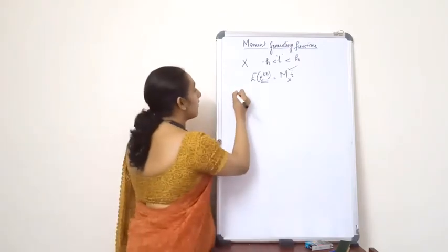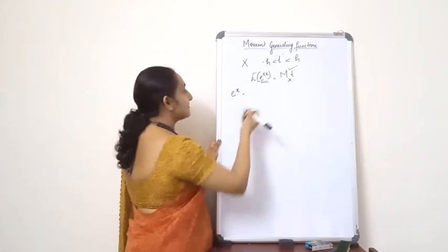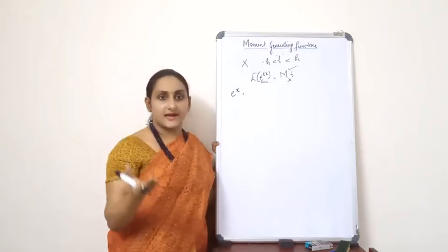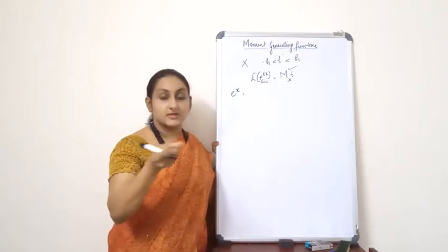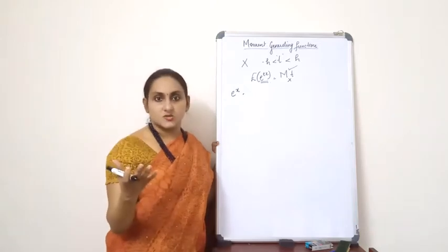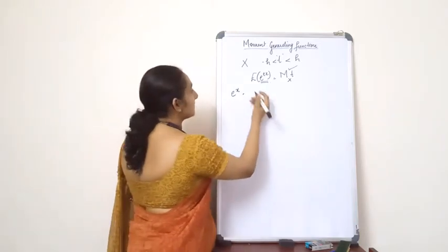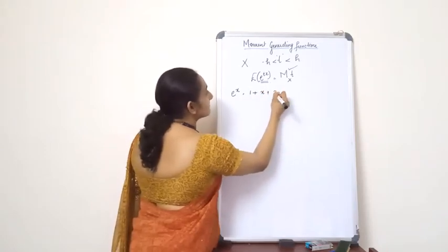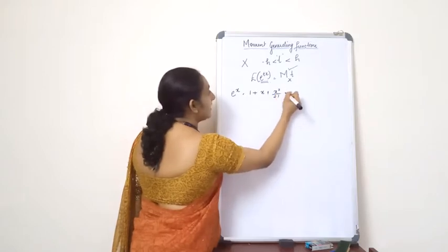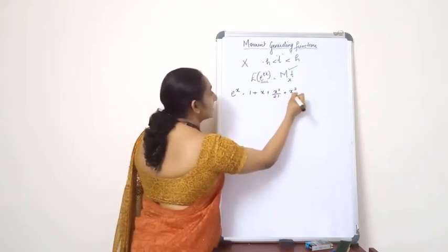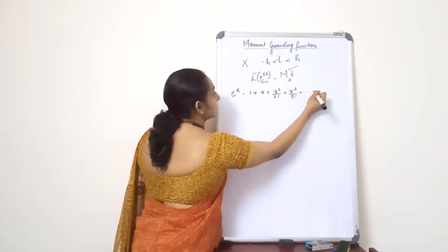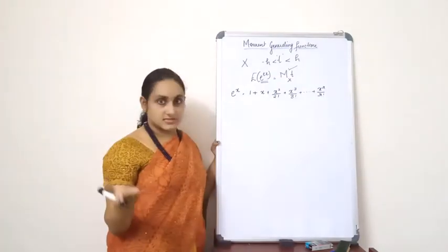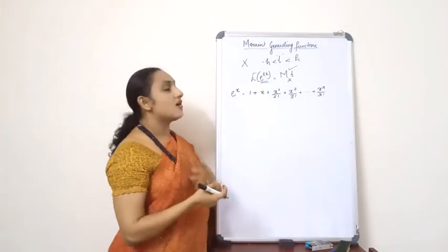I hope you all know the expansion of e raised to x, which you may have learned in your high school mathematics class. The expansion of e raised to x is: 1 plus x plus x squared divided by 2 factorial plus x cubed divided by 3 factorial, and so on, up to x raised to r divided by r factorial for r terms.